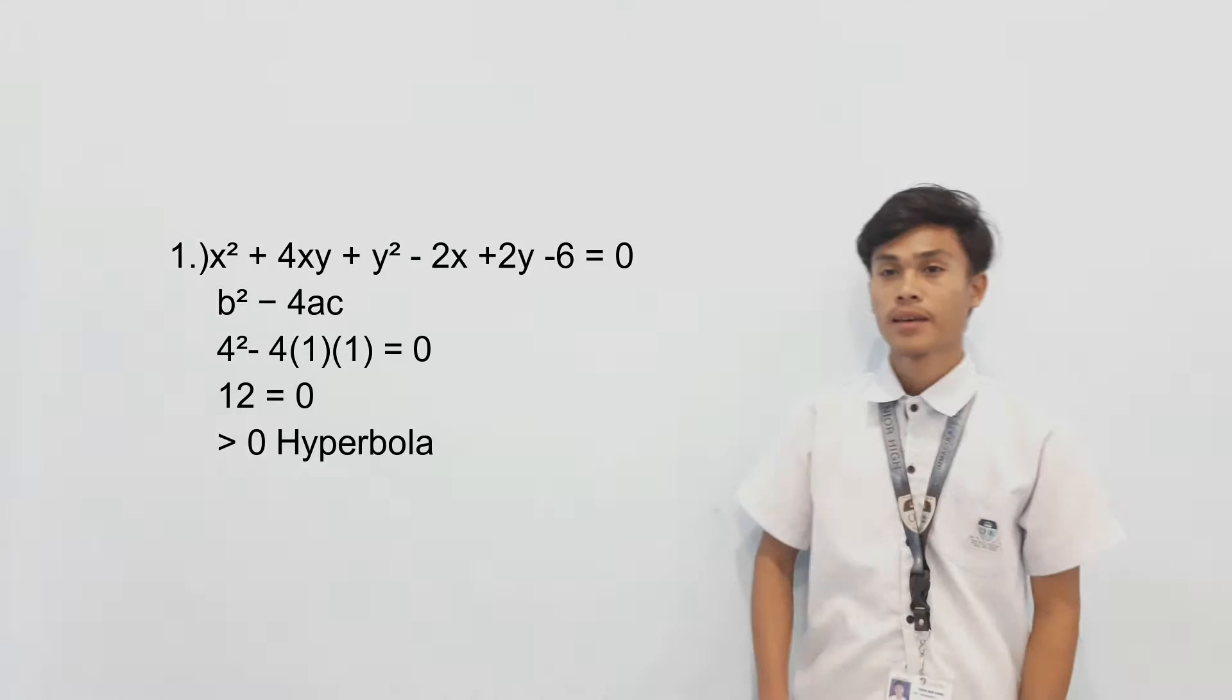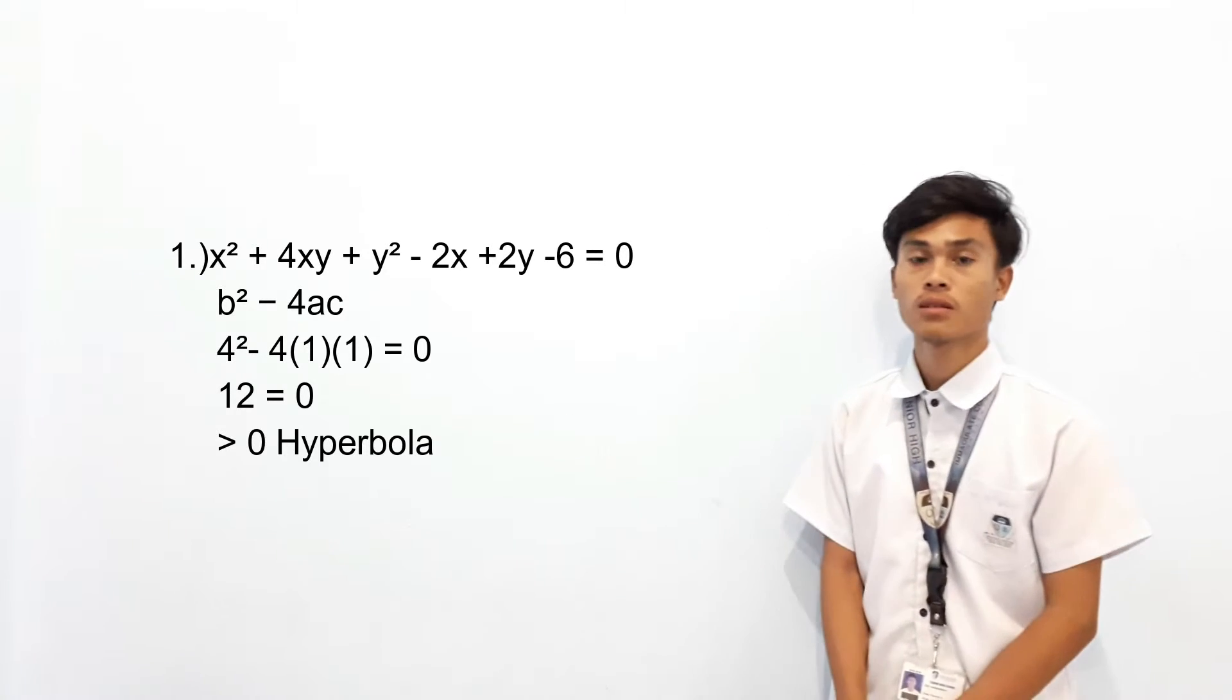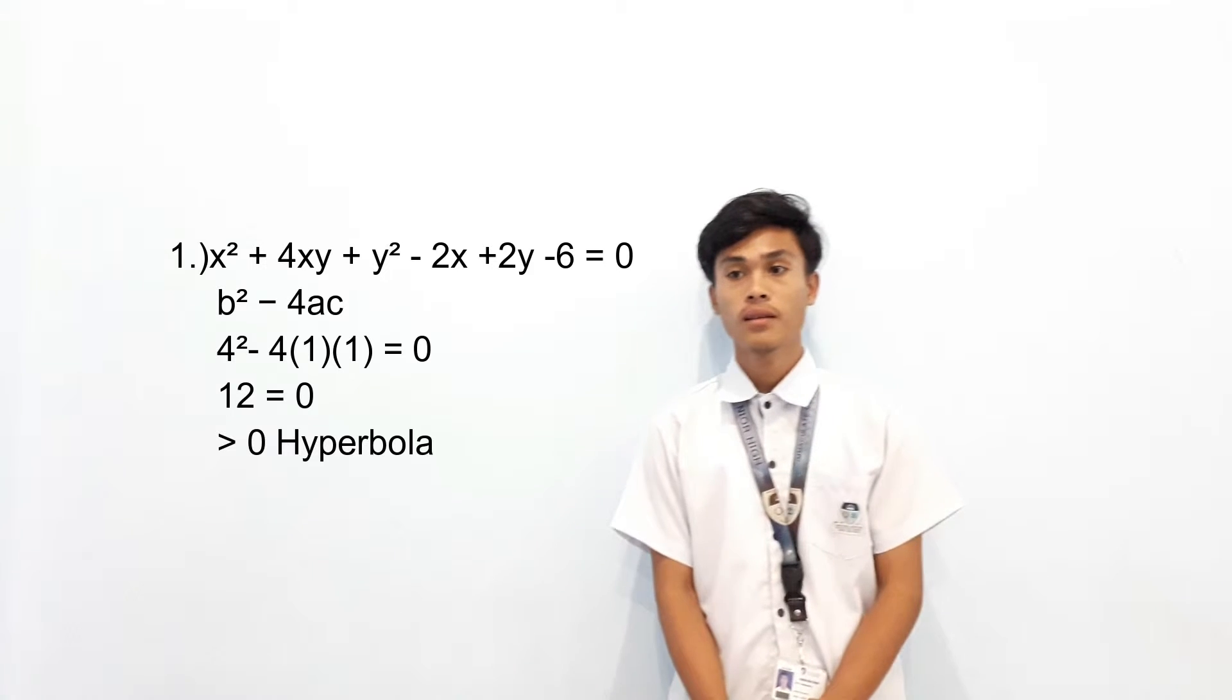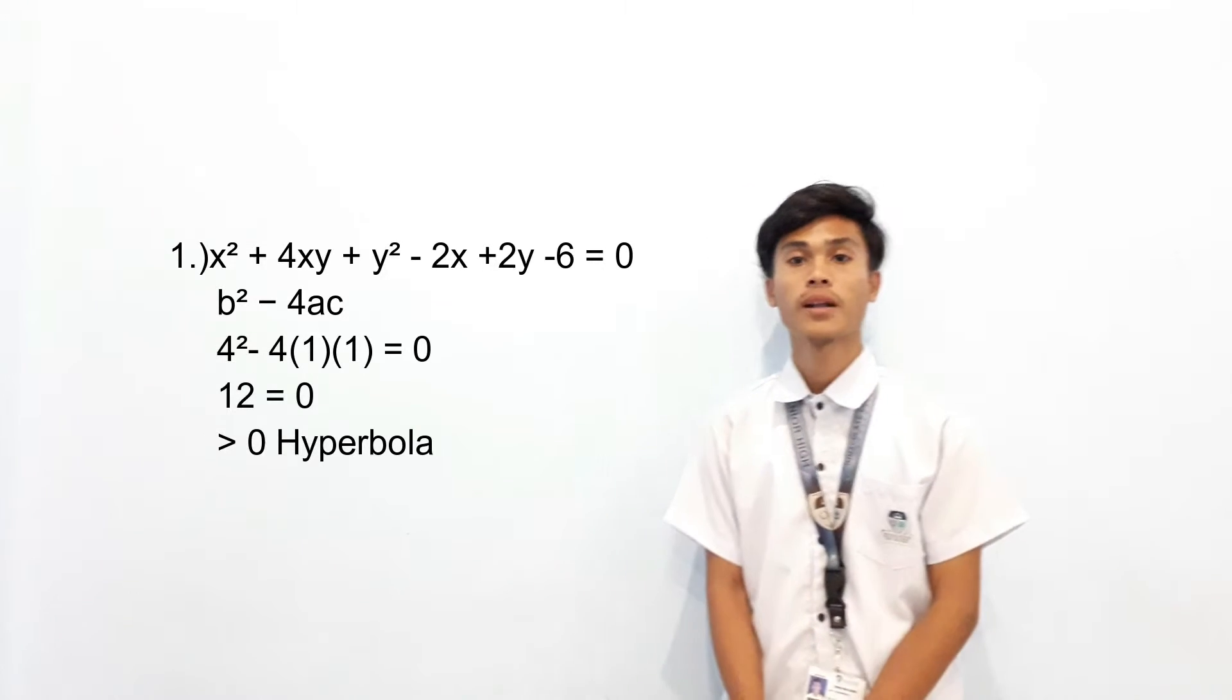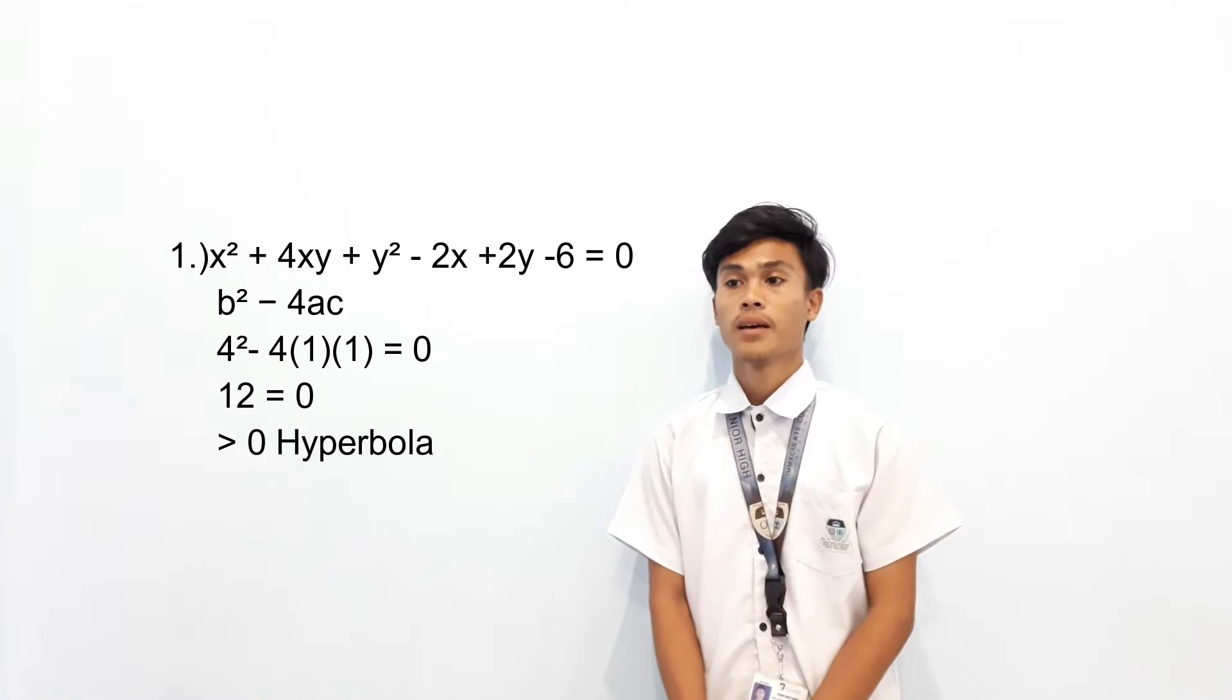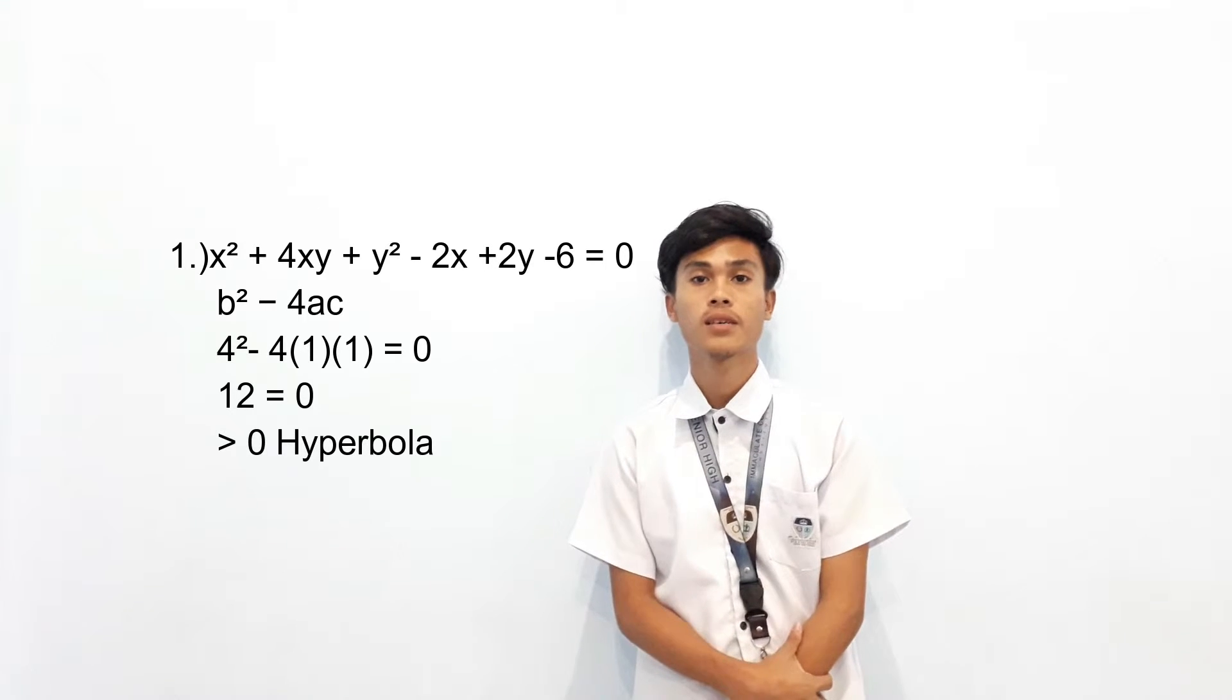Example number one: x² + 4xy + y² - 2x + 2y - 6 = 0. B² - 4AC: B is 4, A is 1, and C is 1. 4² - 4(1)(1) equals 12, which is greater than zero, so the answer is hyperbola.